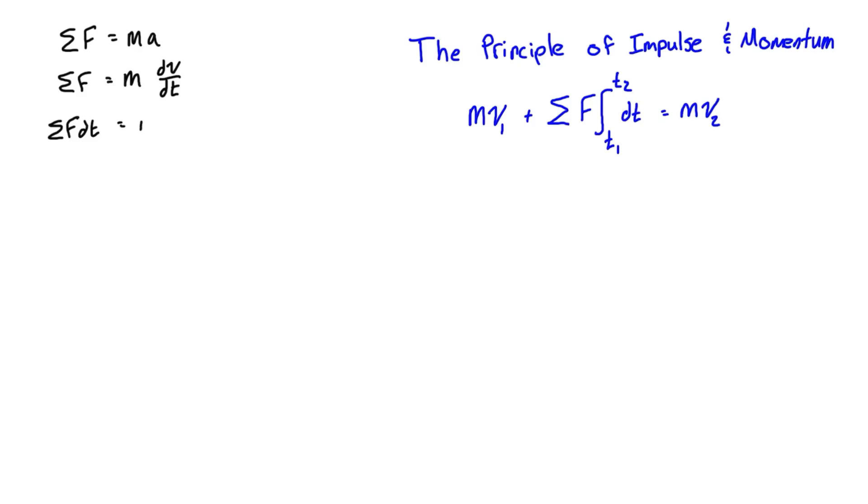We want to integrate both sides, so we have our integral sum F dt is equal to integral of the right hand side m dv. We want to take this as a definite integral, so we'll have from t1 to t2 and from v1 to v2.